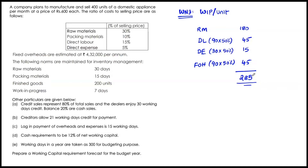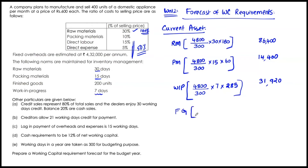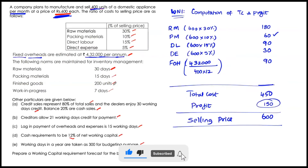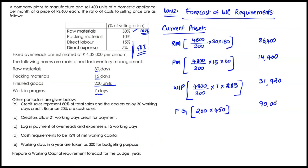Going back to the working capital forecast, for work in progress: 4,800 units over 300 days, for 7 days, multiplied by WIP cost per unit of Rs. 285, gives 4,800 ÷ 300 × 7 × 285 = Rs. 31,920. For finished goods, the question states they maintain 200 units. Overall cost per unit is Rs. 450, so finished goods investment is 200 × 450 = Rs. 90,000.